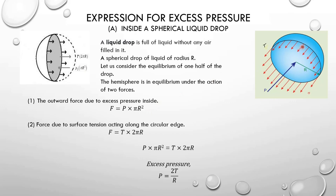What about force due to surface tension? Surface tension acts along the surface at the cut. When we consider the circumference at the cut, the force due to surface tension equals surface tension T multiplied by the length, which is the circumference 2πR. So F = T × 2πR.